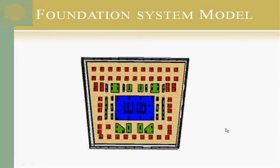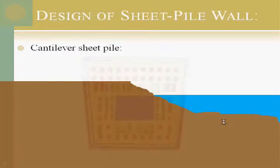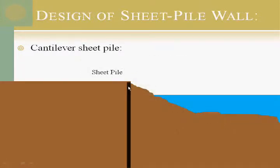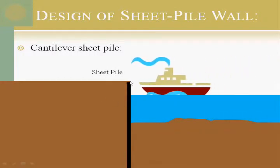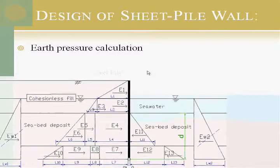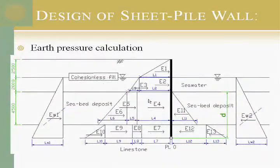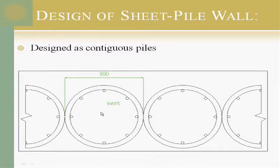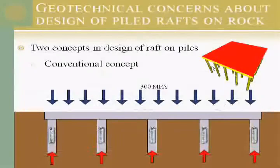This is the cantilever sheet pile. We proposed placing a sheet pile to resist the soil, and the system can be used as a marina. This sheet pile can be easily analyzed using earth pressure calculations — we calculate the earth pressure from the soil and water and design it as a cantilever sheet pile. We chose to design it as contiguous piles because we are not required to make it impermeable; we can let the water through, as water already surrounds the sheet pile.